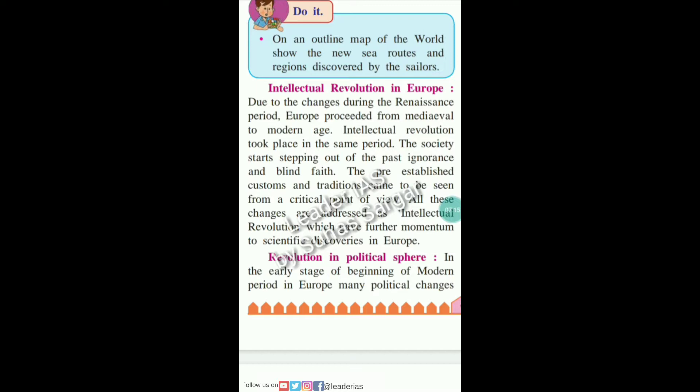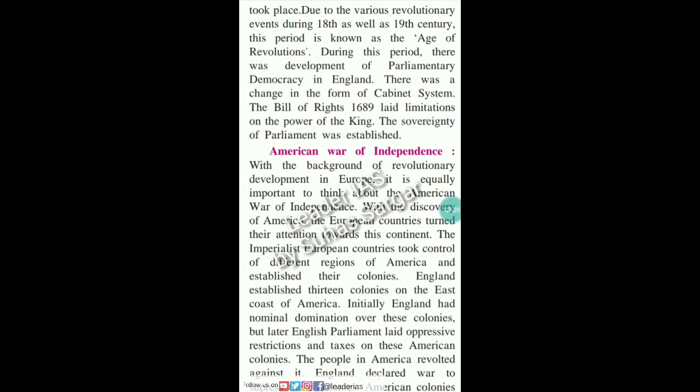In the early stage of the beginning of the modern period in Europe, many political changes took place due to various revolutionary events during the 18th and 19th centuries. This period is known as the Age of Revolution. During this period, there was a development of parliamentary democracy in England, with a change in the form of cabinet system. The Bill of Rights in 1689 placed limitations on the power of the king, and the sovereignty of the people was established.